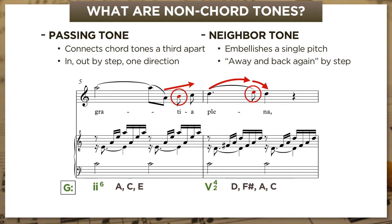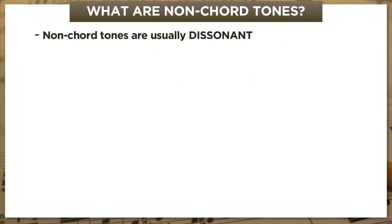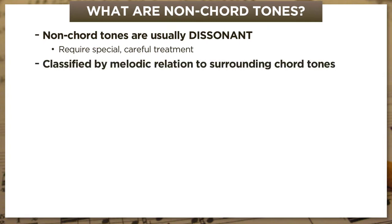Passing and neighbor tones are among the most common non-chord tones in classical music. Non-chord tones are usually dissonant—they clash with the underlying chord—and require careful treatment in the classical style. They're always classified by their melodic relation to the surrounding tones: the linear motion of a passing tone versus the away-and-back gesture of the neighbor tone. All non-chord tones involve stepwise motion of one sort or another—moving in, or moving out, or both.